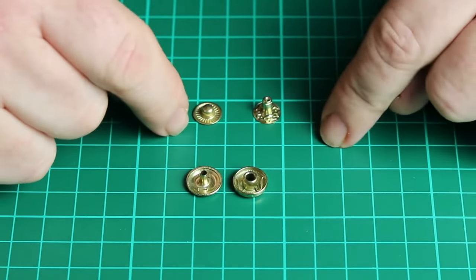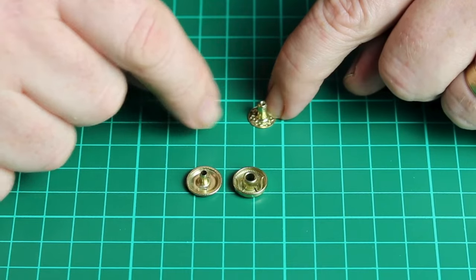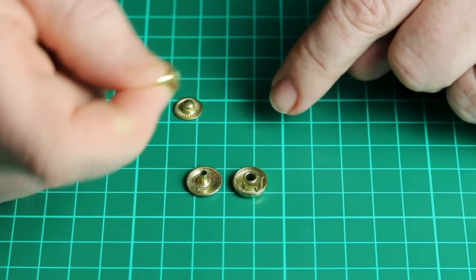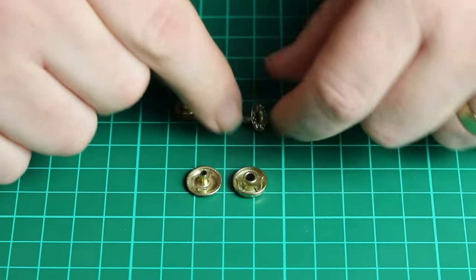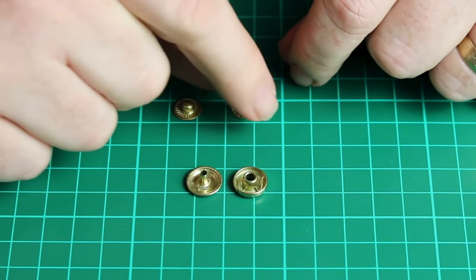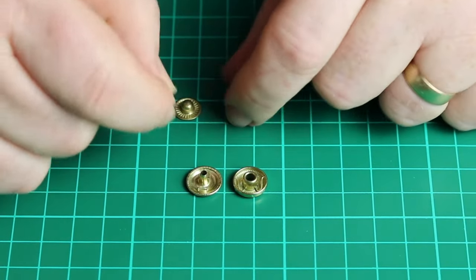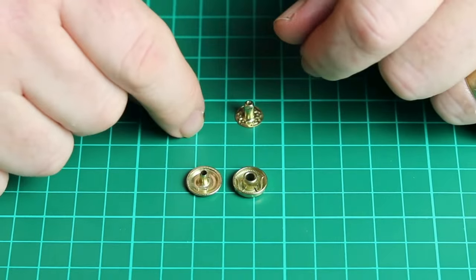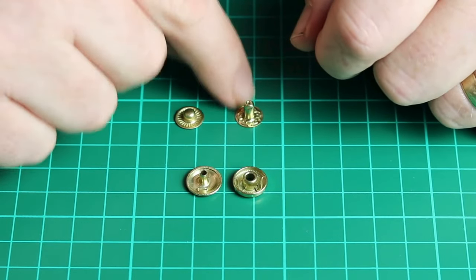On the other side, we have a post which is flat on one side and on the top is a post. And then we have a little button which fits on top of the post.